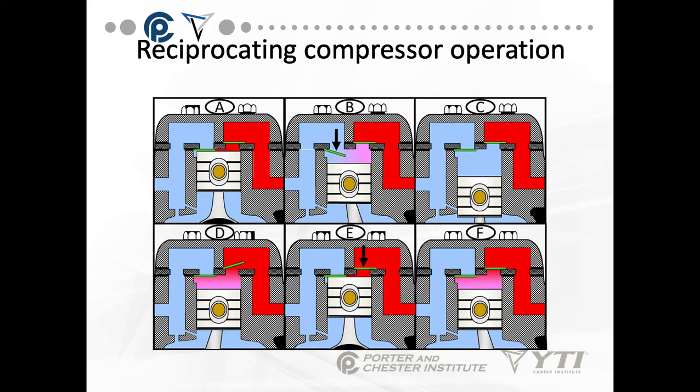The reciprocating compressor operation is pretty simple. The two valves start off closed and the piston is in the up position. In section B, the piston starts coming down, the suction valve opens, and pulls in low-pressure refrigerant from the suction line. At point C, we're at equilibrium with the piston at the bottom of its stroke. In D, the piston starts to come up and compresses the refrigerant against the valve on the high-pressure side, pushing the valve open and allowing the high-pressure vapor refrigerant to discharge into the discharge line.